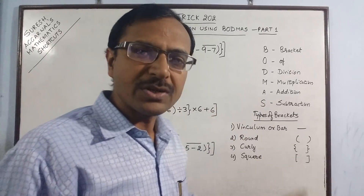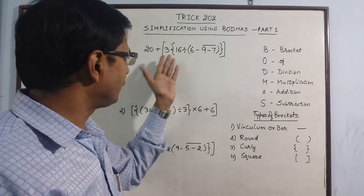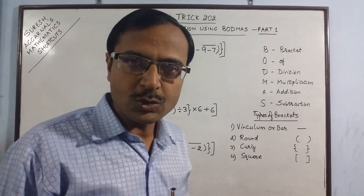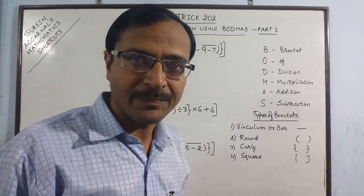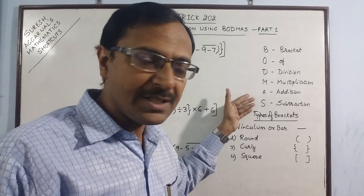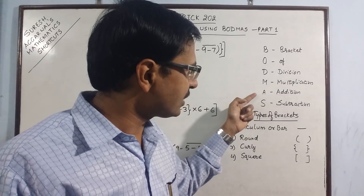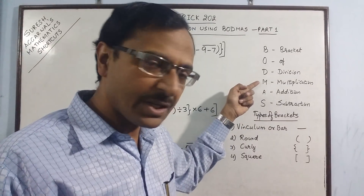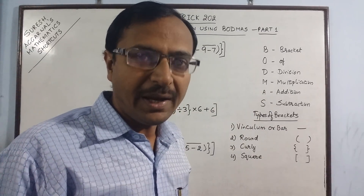When there is a problem involving all operations — positive, negative, multiplication and division — you need to simplify them by assigning priority. The order of priority is: division gets the top priority, followed by multiplication, followed by addition, and subtraction is done at the end.